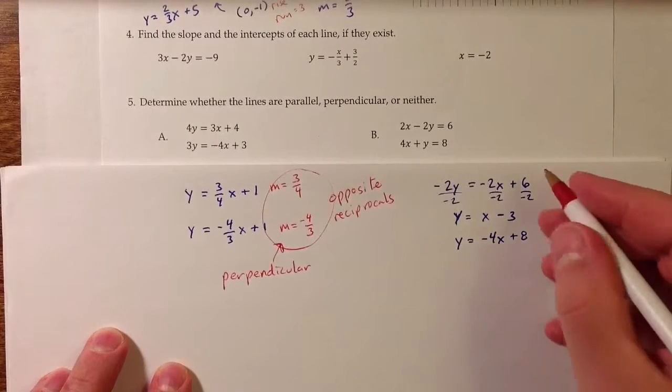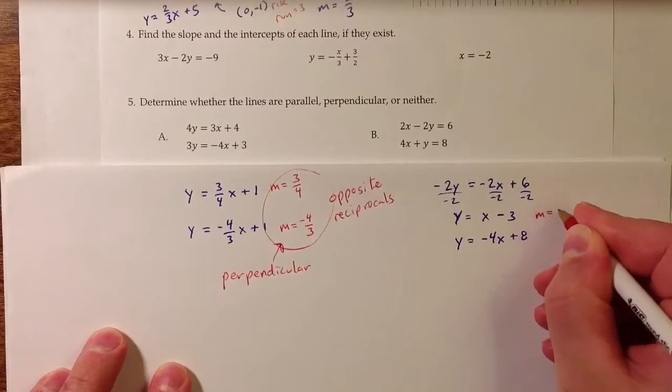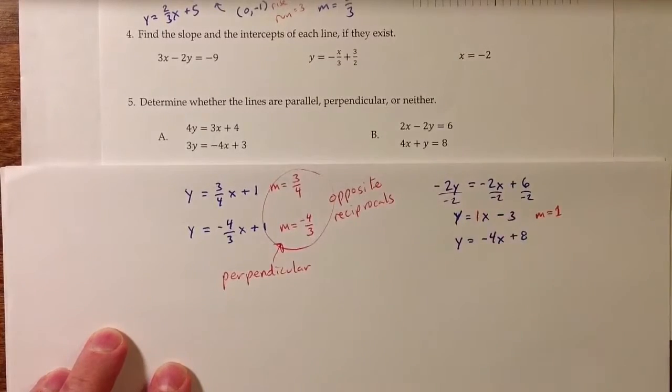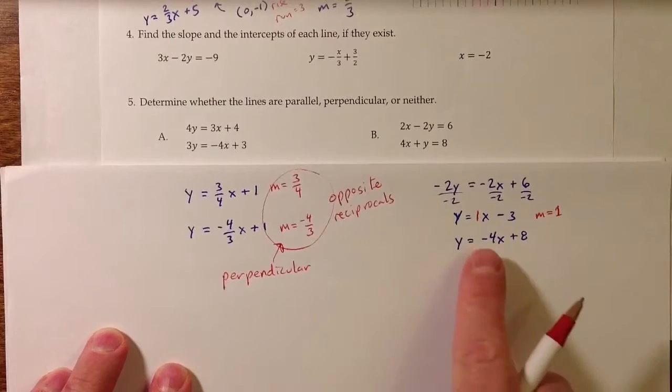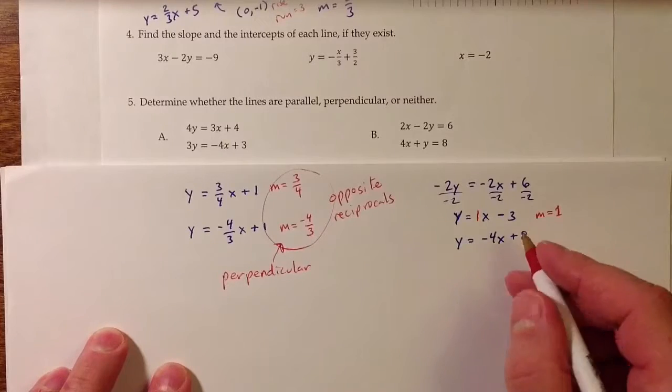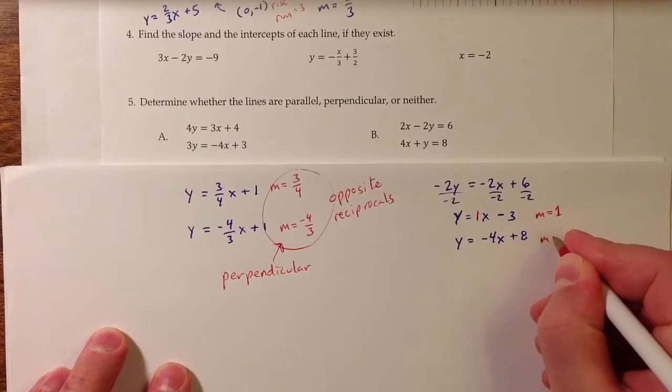So the slope for the first line is 1. I don't write it there, but if I wanted to put a number in front of the x and not change the meaning, I could put the number 1 in front of x. So that's the value for the slope. And for the second line, we get a slope of negative 4.